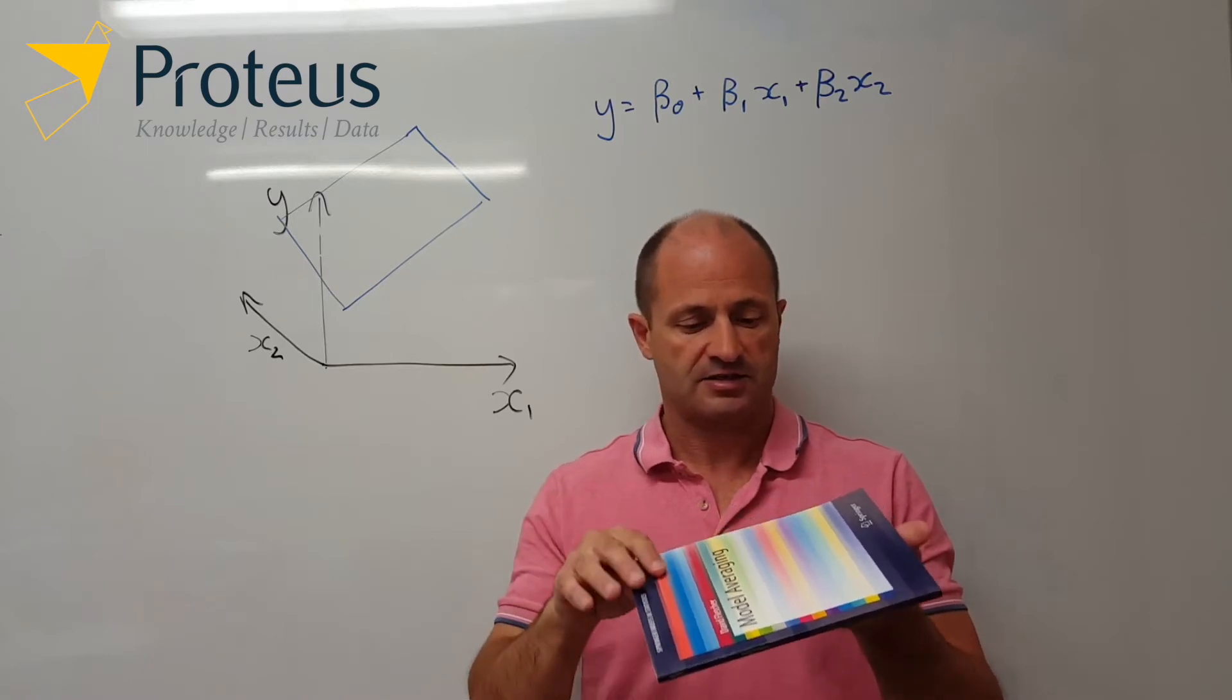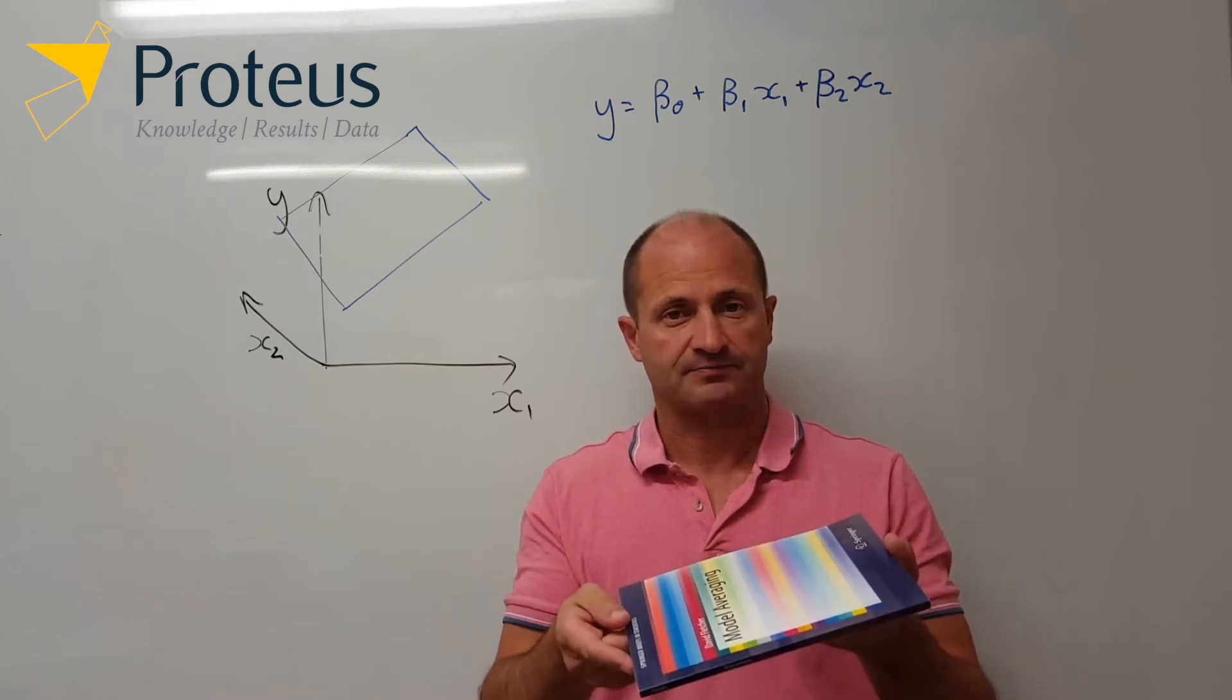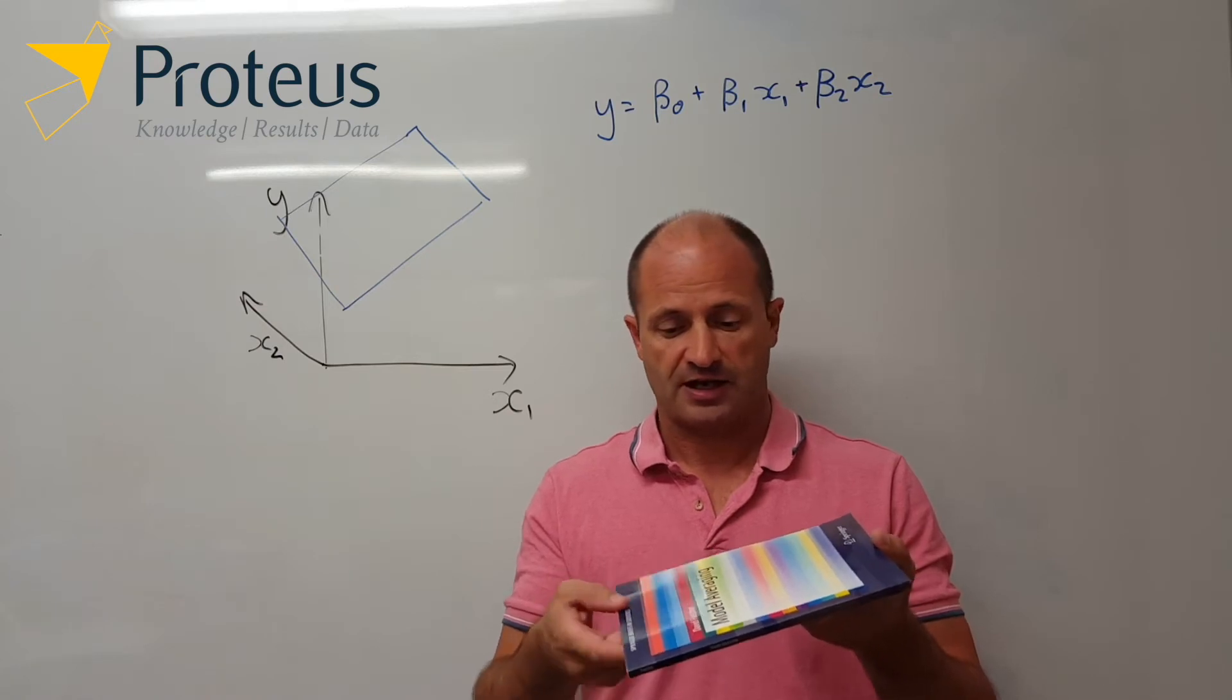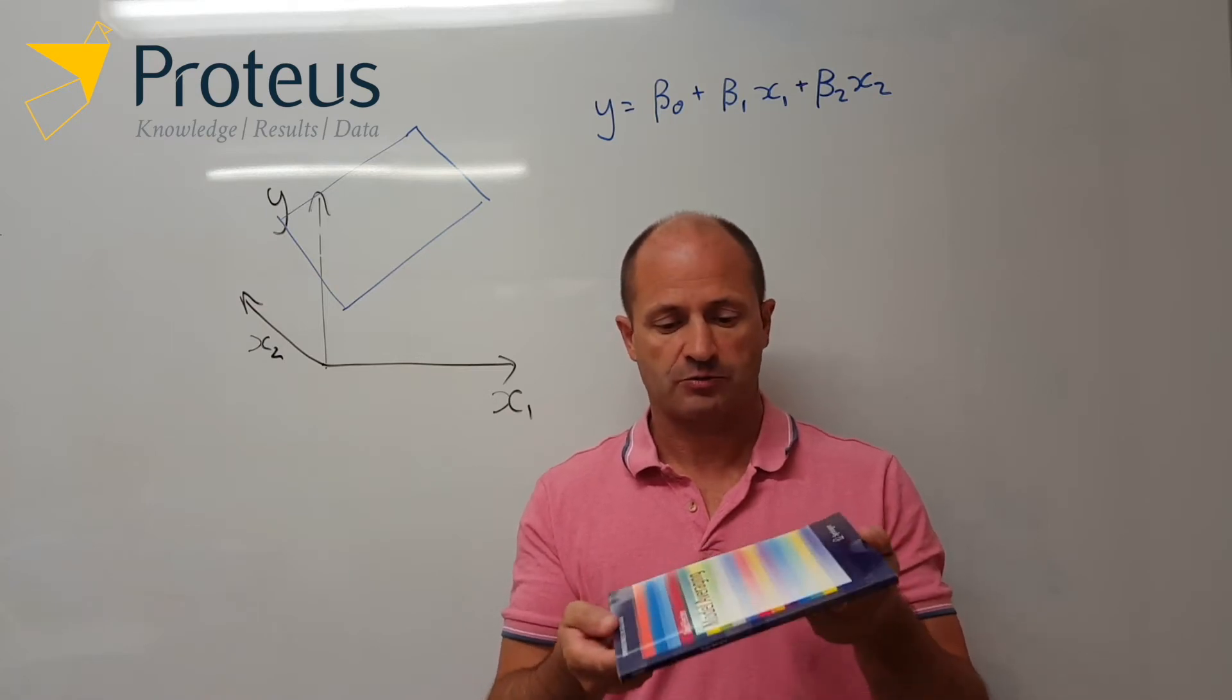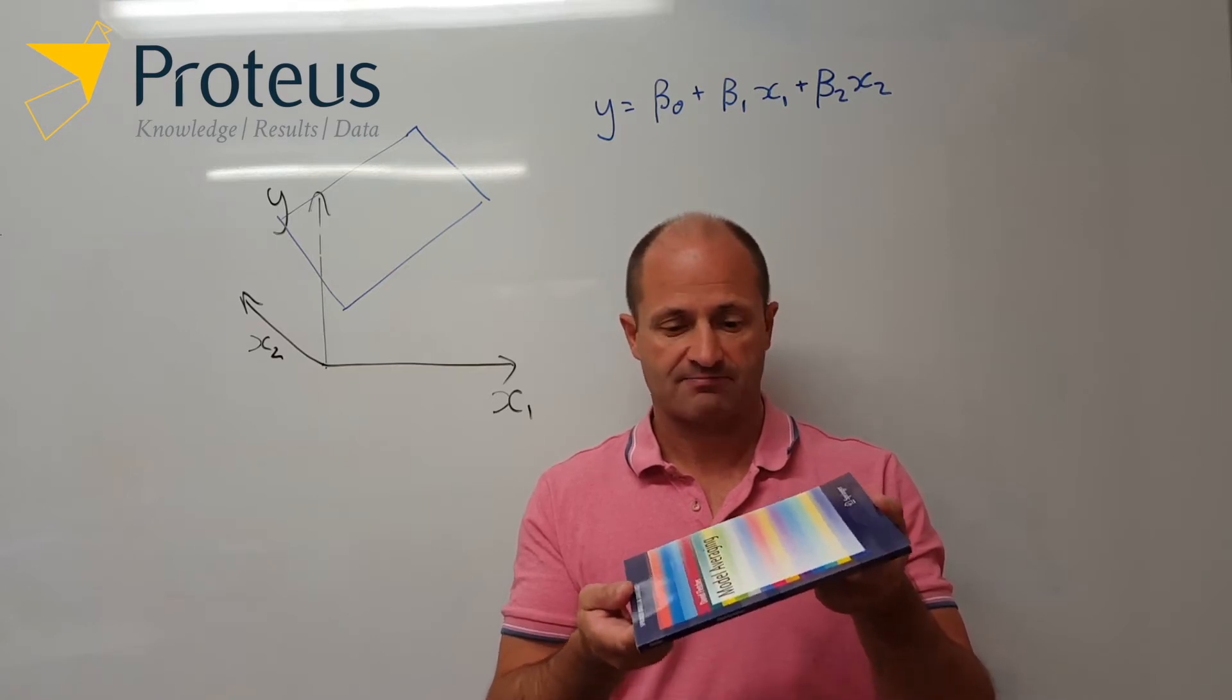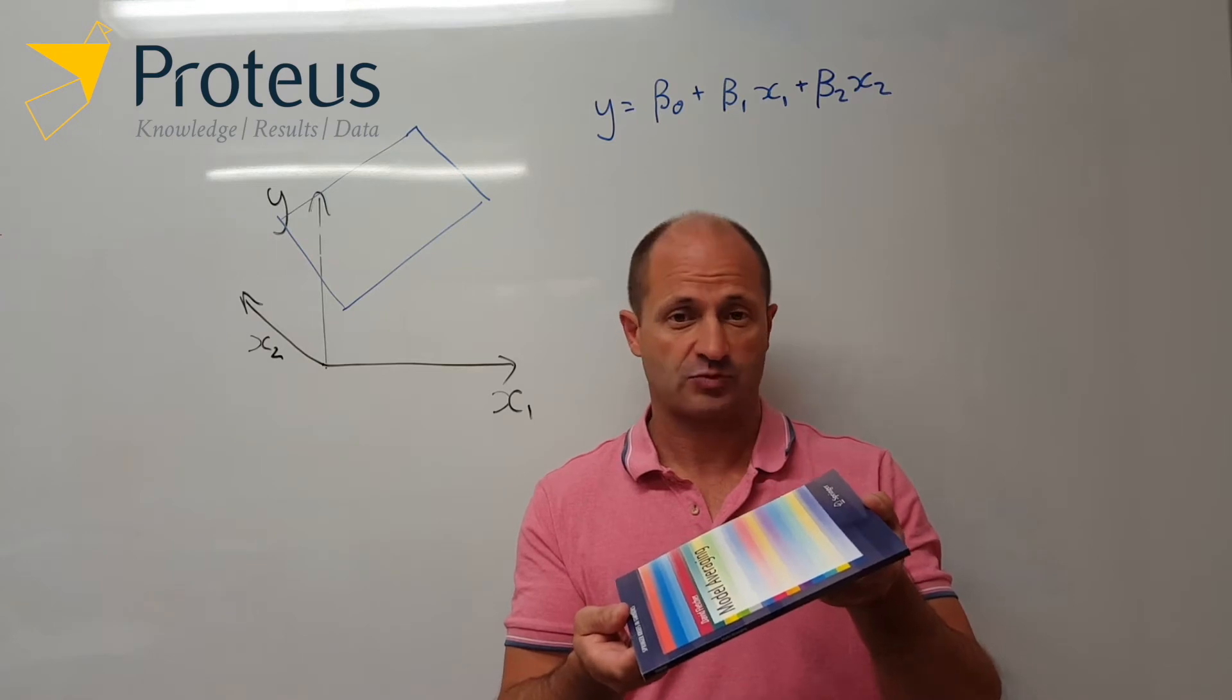Now a key thing here is that this plane, this surface, is still flat. So we just have x1 and x2 have an effect with no interaction term. Now what we're saying is that this regression plane is still flat, but it's just on a certain angle relative to x1 and x2.